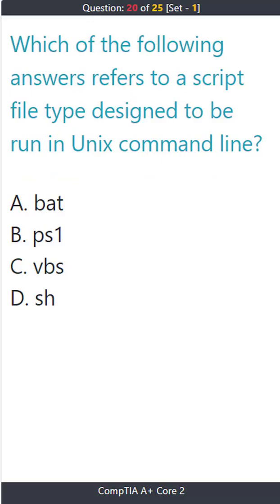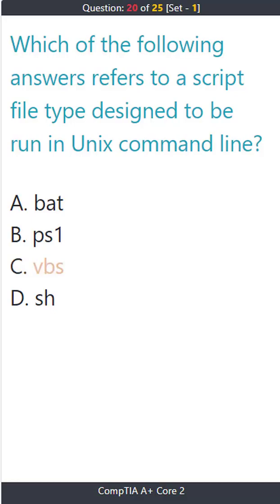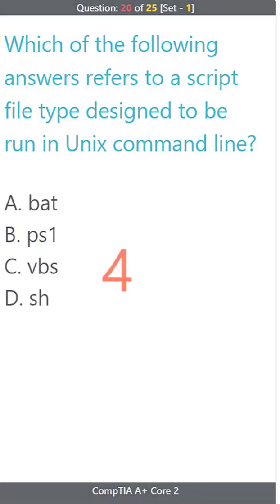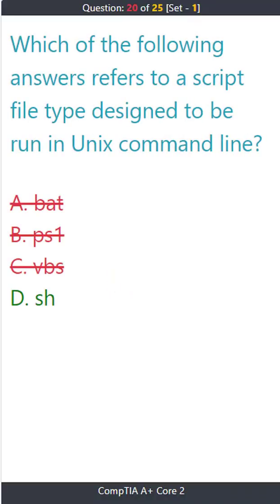Question 20: Which of the following answers refers to a script file type designed to be run in a Unix command line? A) .bat. B) .ps1. C) .vbs. D) .sh. The correct answer is D: .sh.